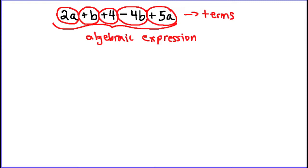Notice that each term has a symbol that goes with it. It's positive 5a, negative 4b, positive 4, positive b. And this 2a at the front here, even though there's not a symbol there, we know or we can imply that it is a positive 2a, because when we have a positive number, we don't write the symbol. So those are the terms.